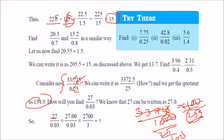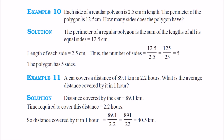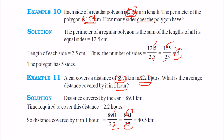For a case like 27 divided by 0.03: write 0.03 as 3 by 100, take 100 above to get 2700 by 3, which is 900. For a regular polygon with each side 2.5 cm and perimeter 12.5 cm: solve 2.5 times x equals 12.5, so x equals 12.5 by 2.5. Since both decimals cancel, divide 125 by 25 to get 5 sides. A car covers 89.1 km in 2.2 hours; the average distance per hour is 89.1 by 2.2 — since both have one decimal, divide 891 by 22 to get 40.5 km/h.